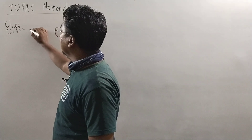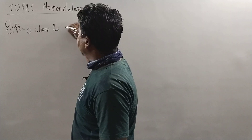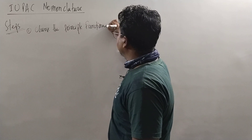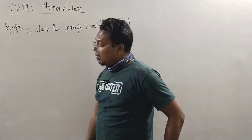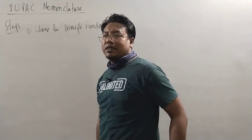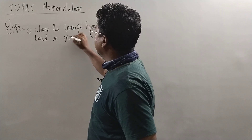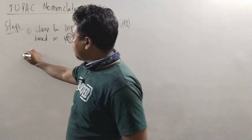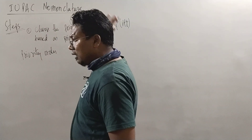Step number one: choose the principal functional group. You can learn from the principal functional group. The principal functional group is based on the priority order of functional groups. So creating a priority order is why you have to apply the priority order.